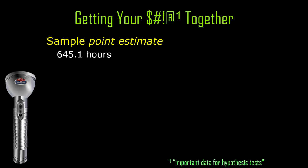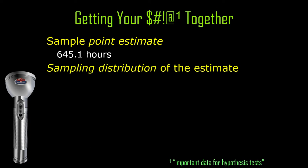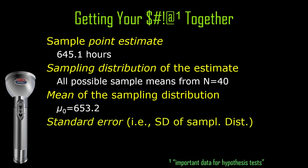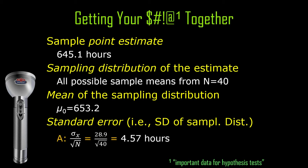The sample point estimate is 645.1 hours — that's the sample mean. The sampling distribution of the mean is all possible sample means from n equals 40. The mean of that distribution is the same as the null hypothesis mean; we assume the null hypothesis is true. The standard error of that distribution is the standard deviation of 28.9 hours divided by the square root of 40, which ends up being about four and a half hours.